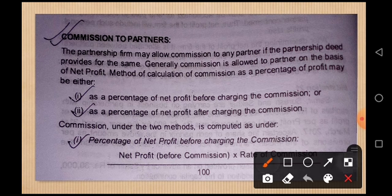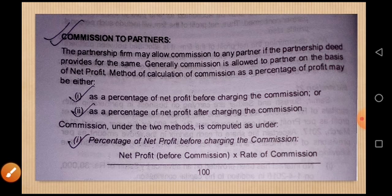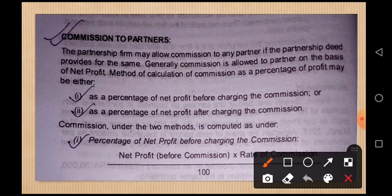The first method is: commission as a percentage of net profit before charging commission. The second method is: commission as a percentage of net profit after charging commission. For the first method, the formula is: net profit before charging commission multiplied by rate of commission divided by 100.